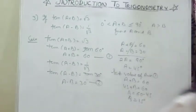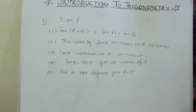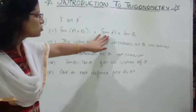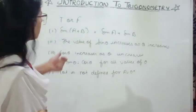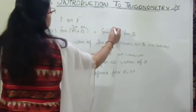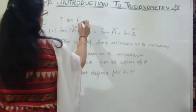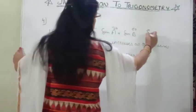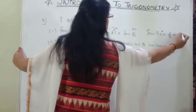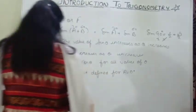Now question number 4: state whether these statements are true or false. First: sin(A+B) = sinA + sinB. To check, substitute A = 30° and B = 60°. LHS = sin 90° = 1. RHS = sin 30° + sin 60° = 1/2 + √3/2. These are not equal, so this is false.